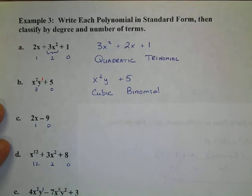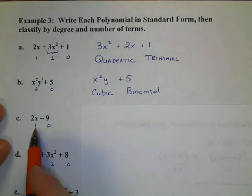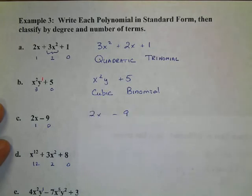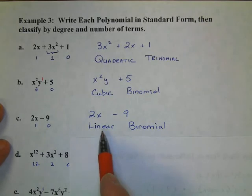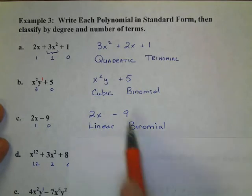Our next one is 2x minus 9. I've written the degree of 1, degree of 0. So, once again, that's the correct order. And so, that is called a linear binomial. Linear is the new term that we have for a degree of 1. And we always name a polynomial by its highest degree. So, it's a linear binomial. Binomial because of two terms.